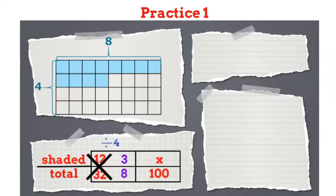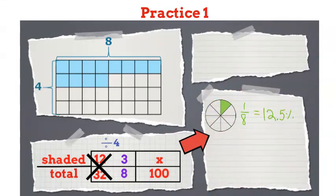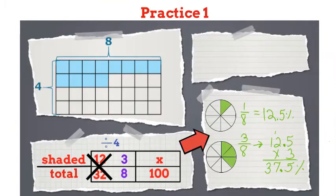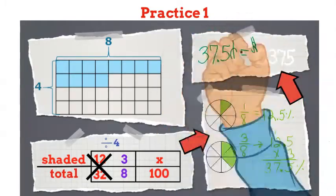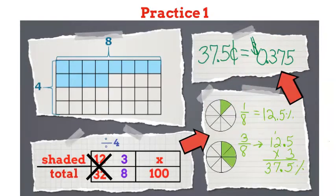I remember that 1 eighth is a benchmark fraction that is equal to 12 and a half percent. That means that 3 eighths is simply 12.5 times 3. This is 37 and a half percent. To change a percent to a decimal, we simply think, how would I write 37 and a half cents with a dollar sign? This is 0.375.